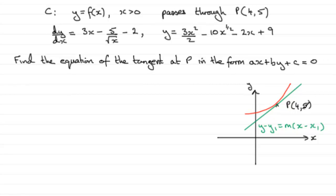X1 will be 4, Y1 will be 5. We've just got to find out M, the gradient of the tangent at this point. And the gradient of the tangent we should know is the same as the gradient of the curve at that point.